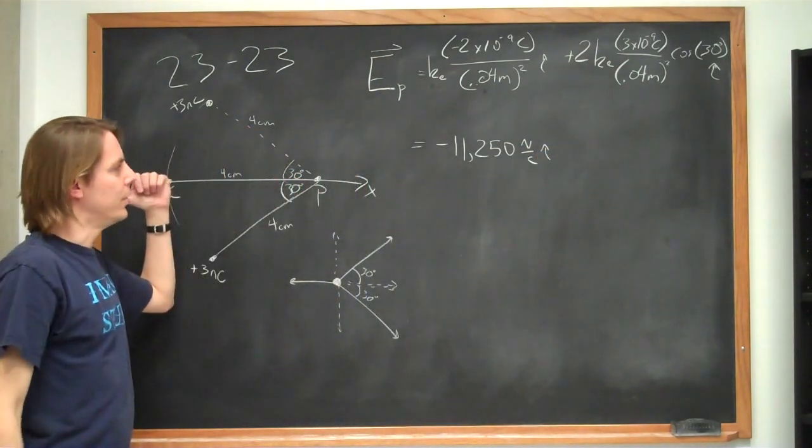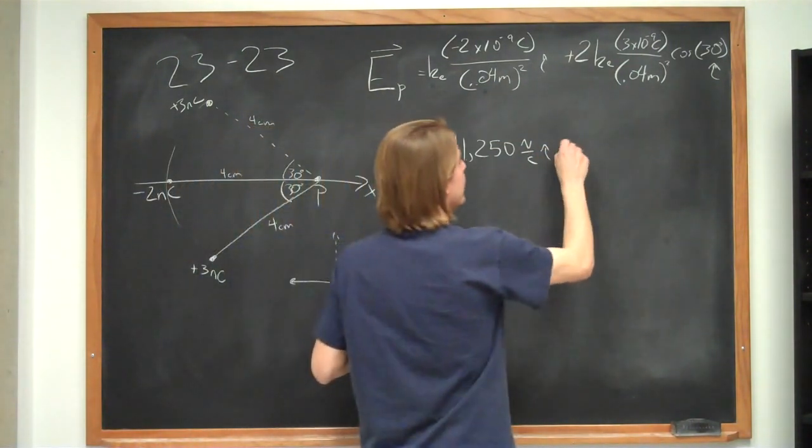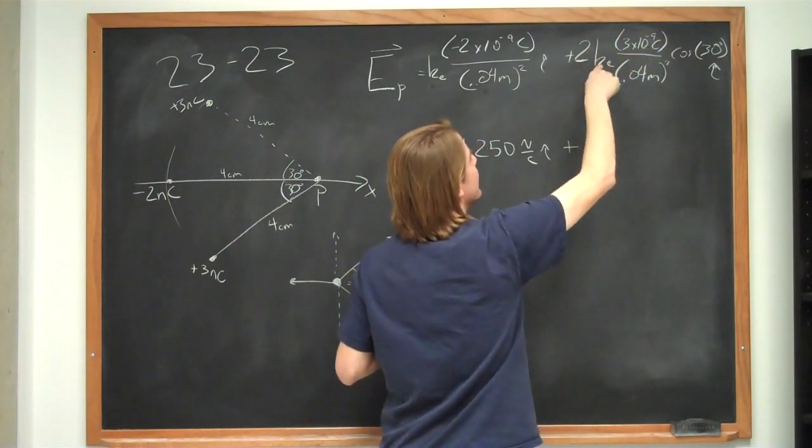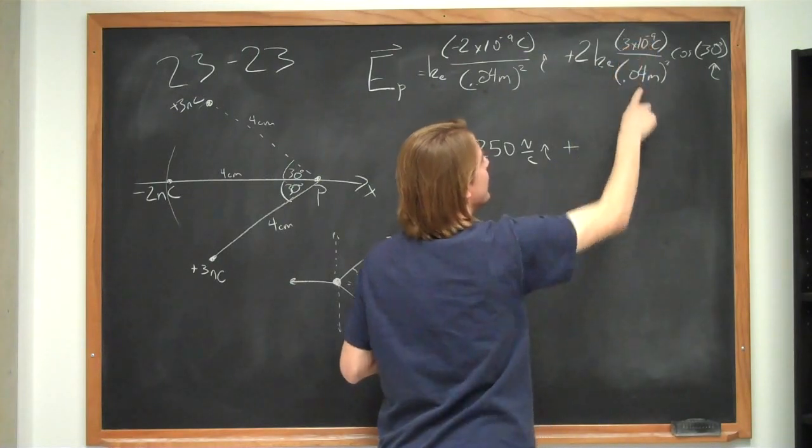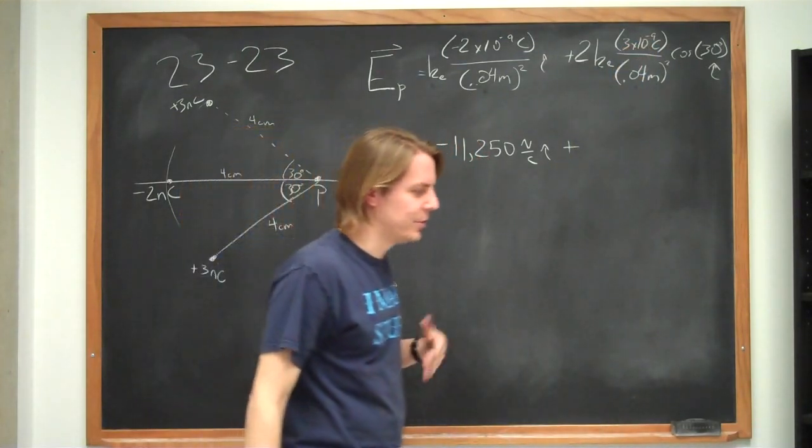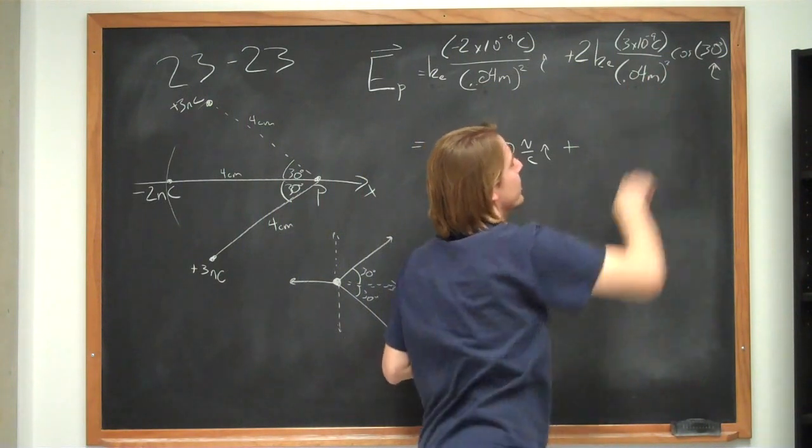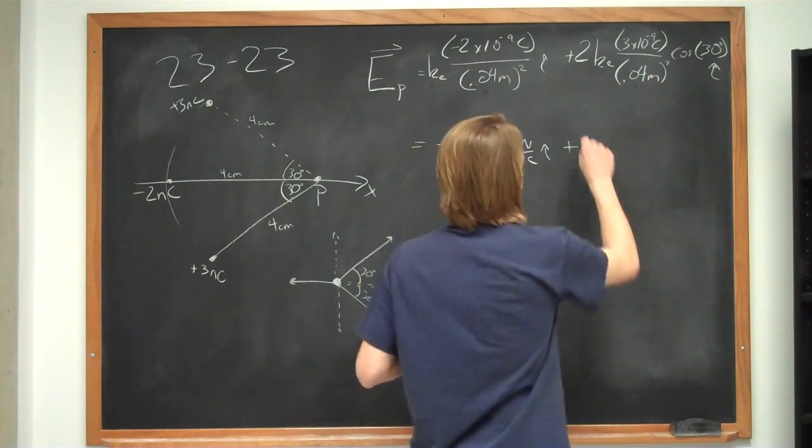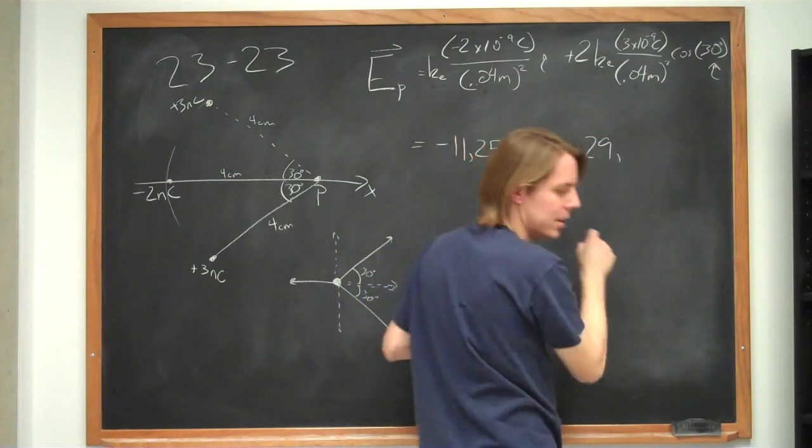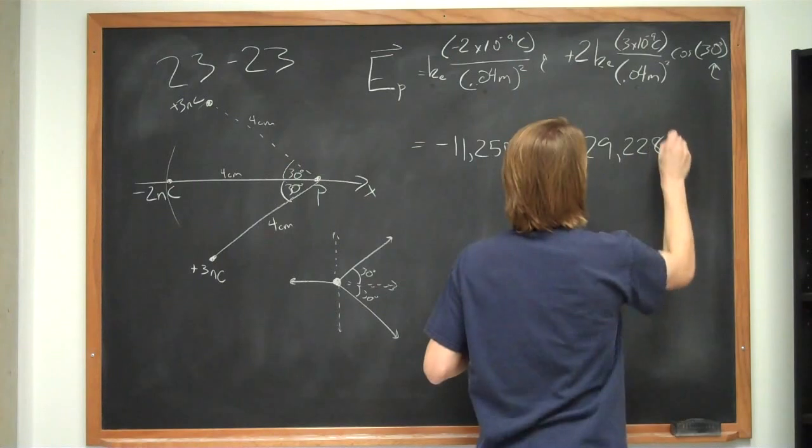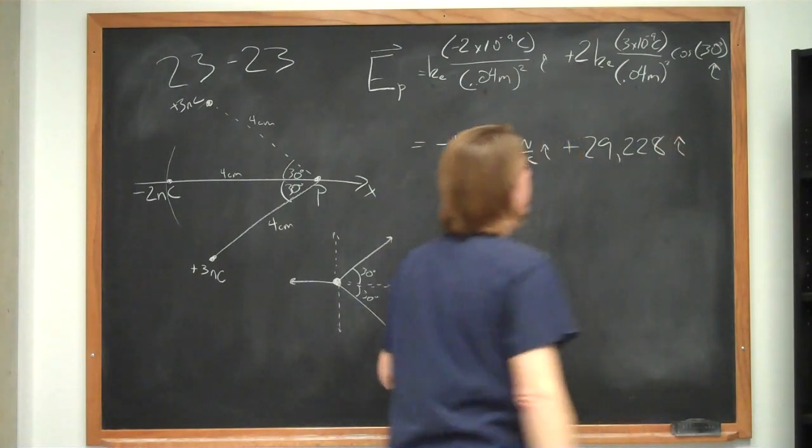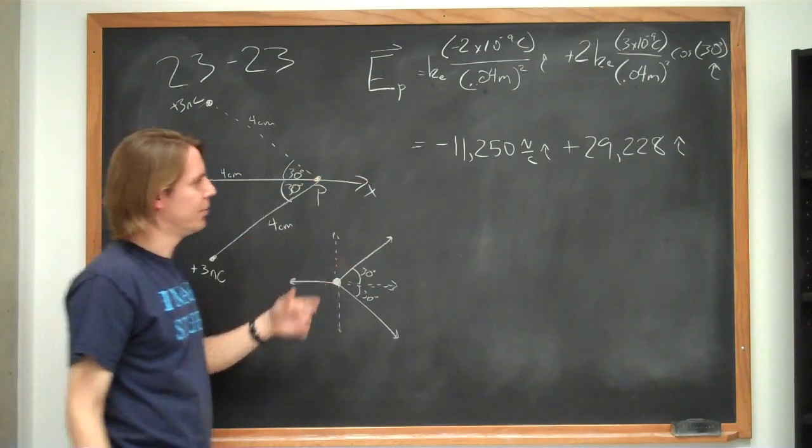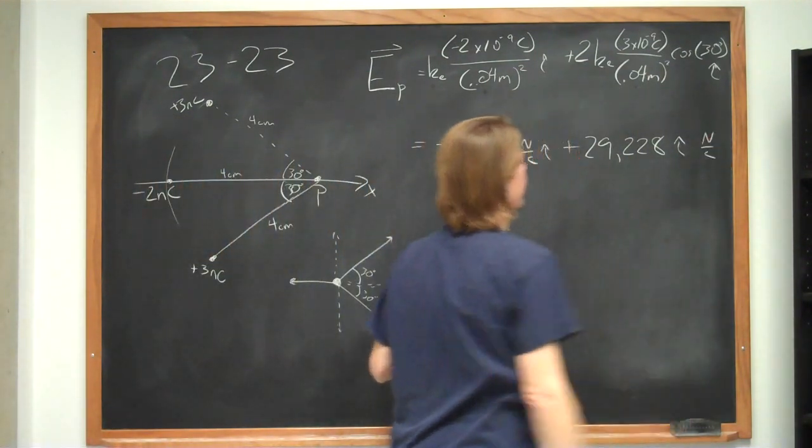And it's negative. So a field this way. And then plus, here's 2 times 9 times 10 to the 9 times 3 times 10 to the minus 9. So let's see. That's 2 times 9 is 18. Times 3 is 54. But again, I'm going to divide by 0.04 squared, which makes it a large number. And we multiply by the cosine of 30 degrees, which I think is square root of 3 over 2. You do all that, and you get 29,228. So that is a positive force, or a positive field in the i-hat direction. Just like this diagram says it should be. This is also per coulomb.